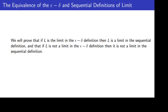Today we will prove the equivalence of the epsilon-delta definition of limit and the sequential definition of limit. We will prove that if L is the limit in the epsilon-delta definition, then L is a limit in the sequential definition, and that if L is not a limit in the epsilon-delta definition, then it is not a limit in the sequential definition. This will prove that whenever we have a limit in one definition, it is also a limit in the other definition.